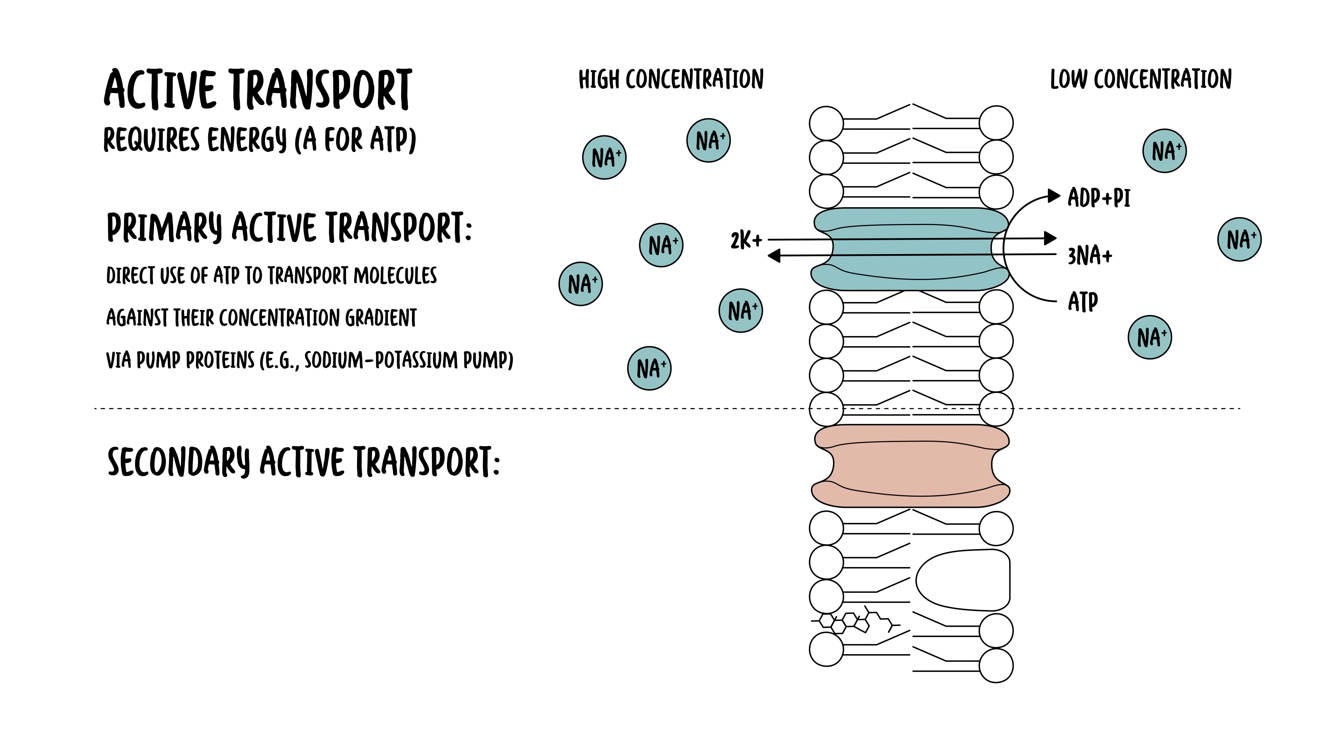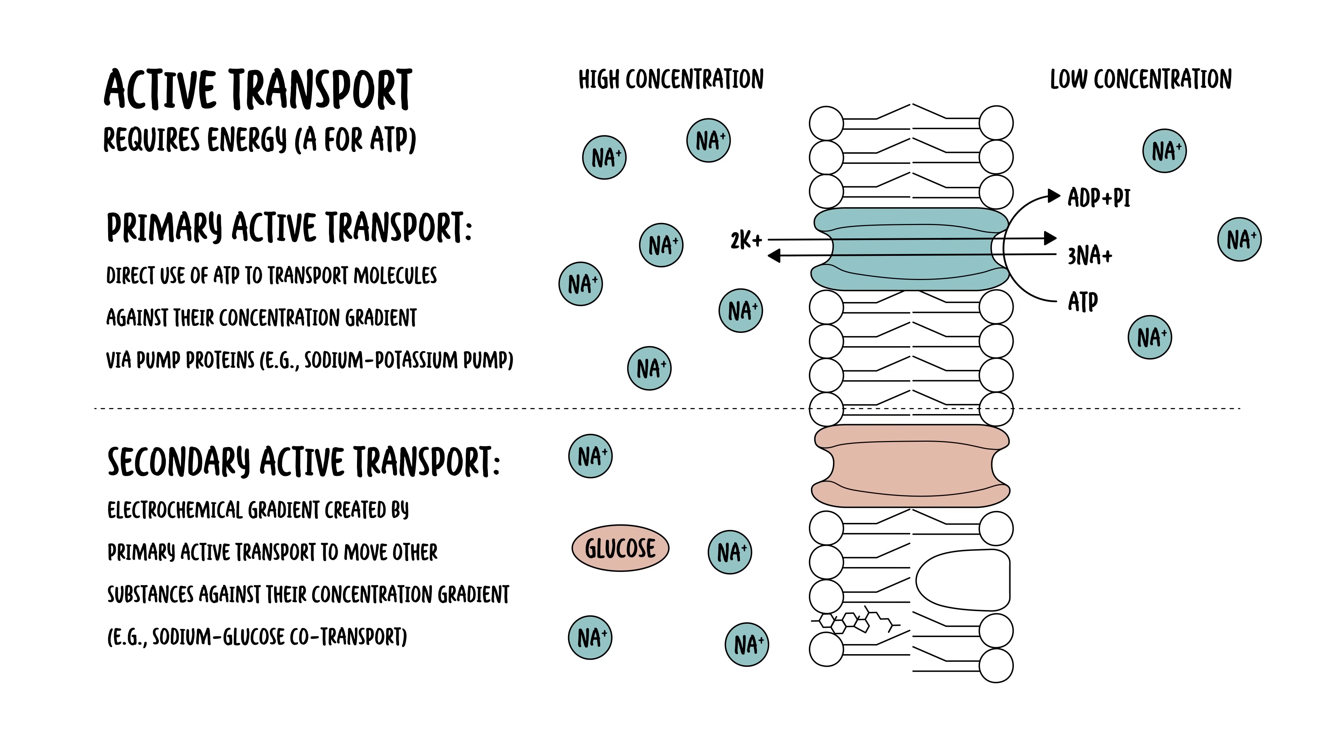Secondary active transport utilizes the energy stored in the electrochemical gradient created by primary active transport to move other substances against their concentration gradient. A good example of this is the sodium-glucose co-transporter. So as the sodium moves across the membrane, it also carries glucose with it.